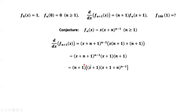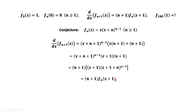We write it as this expression. By the induction hypothesis, we assume for n it is true. Therefore, fn of x plus 1 — here's x plus 1, here's x plus 1 — so we have this result. This part is fn of x plus 1. By induction, we have completed the proof. This formula is true.